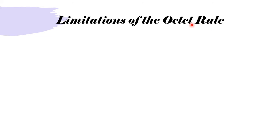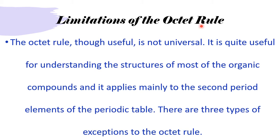Now we move on to the limitations of the octet rule. We agree that the octet rule is very useful, but it is not universal — it applies to about 90% of cases, mainly to the structures of organic compounds and second-period elements of the periodic table. There are three types of exceptions to the octet rule.